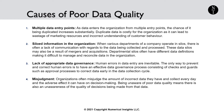The second is siloed information in the organization. When various departments of a company operate in silos, there is often a lack of communication with regards to the data being collected and processed. These data silos may also be a result of mergers and acquisitions. Departmental silos often have different data definitions, making it difficult to manage and reconcile data in the organization.